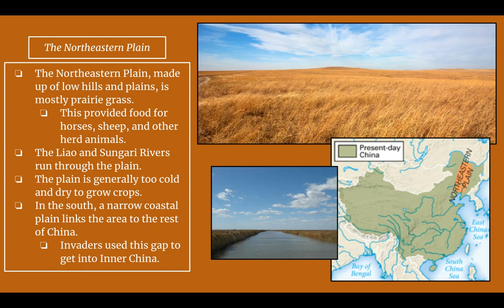The northeastern plain is made up of low hills and plains, and is mostly prairie grass — you can see this yellow grass here — which provides food for horses, sheep, and other herd animals, so herding is one thing that can be done in the northeastern plain. The Liao and Tsungari rivers run through the plain. The Liao river is quite shallow and can only hold small boats, while the Tsungari is bigger and can hold bigger boats. The plain is generally too cold and dry to grow crops, and in the south a narrow coastal plain links the area to the rest of China. Invaders would have used this gap to get into inner China.